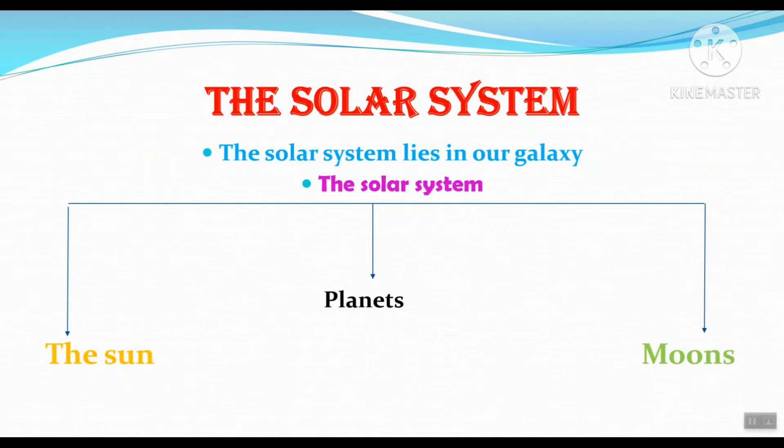And this system consists of the sun, planets, and moons.